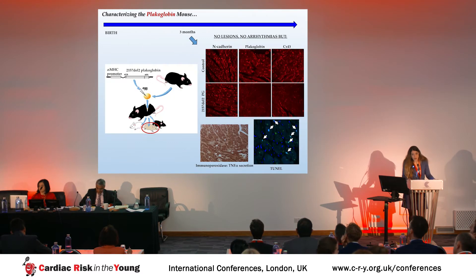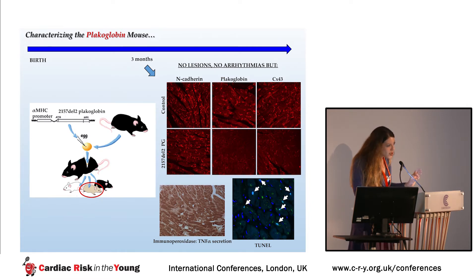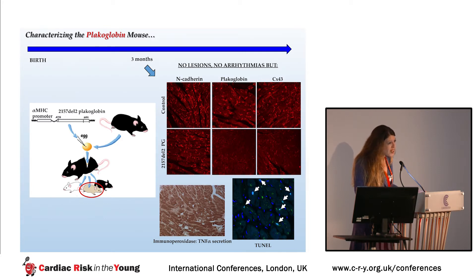The plakoglobin mouse, by four months of age, has no evidence of disease — no arrhythmias, no histological lesions. But if you look at its heart under the microscope, you see that plakoglobin and connexin-43 are gone from the junctions. It shows increased levels of apoptosis and it does secrete pro-inflammatory mediators, so it does show the fundamental features of disease we first showed in the patient heart.